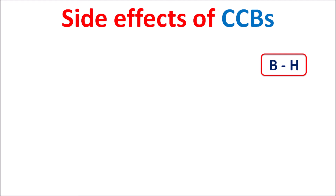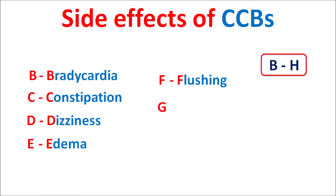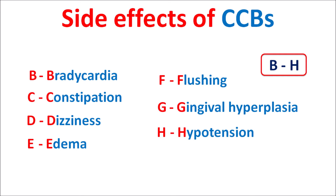These side effects can be easily remembered with the simple mnemonic B2H, where each letter indicates one side effect of CCBs: B = bradycardia, C = constipation, D = dizziness, E = edema, F = flushing, G = gingival hyperplasia, and H = hypotension. Most of these side effects are associated with the hypotensive actions of calcium channel blockers.